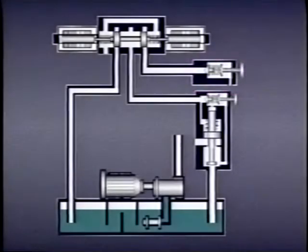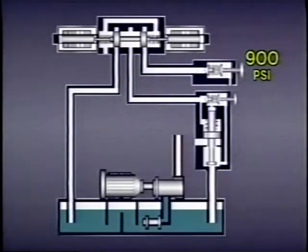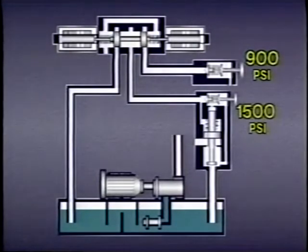In this example, the remote pilot valve is set to open at 900 PSI, while the main pilot valve is set for 1500 PSI. As long as the remote pilot valve remains connected, it controls the operation of the main valve. If the remote pilot is disconnected, the other pilot valve determines the pressure at which the relief valve becomes passing.